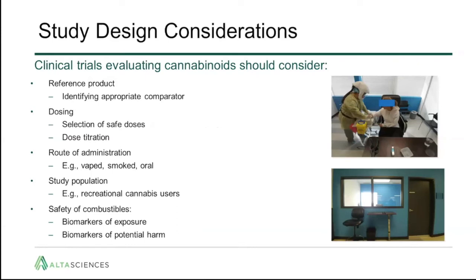Some study design considerations: when evaluating cannabis in the clinic, you need to identify an appropriate comparator reference product, and dosing needs to be safe. In some cases there may need to be dose titrations if subjects are not used to cannabis and need a carefully escalated target dose. The route of administration — whether vaped, smoked, or oral — needs to be considered. When products are smoked or vaped in a clinical study, one needs controlled smoking chambers that allow airflow and circulation and limit exposure to staff.